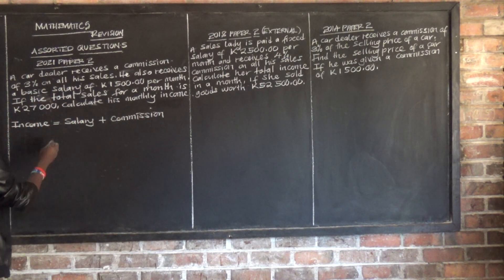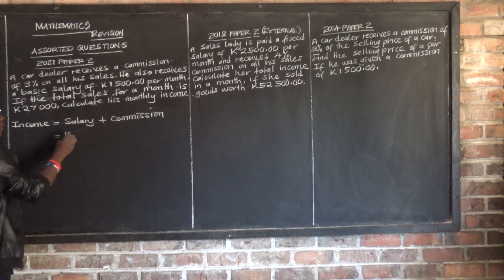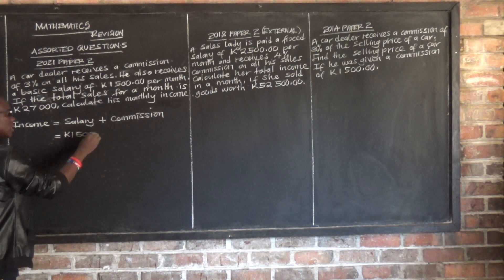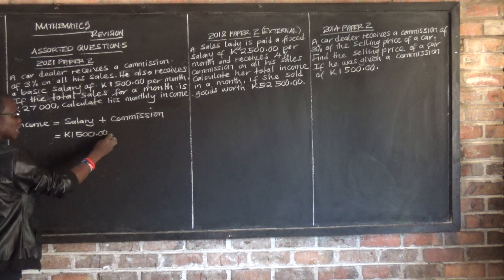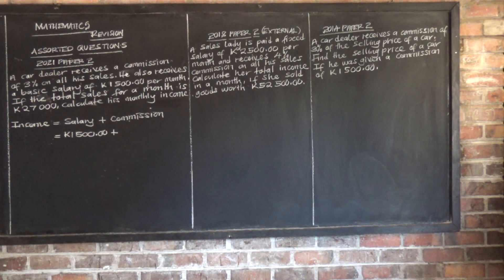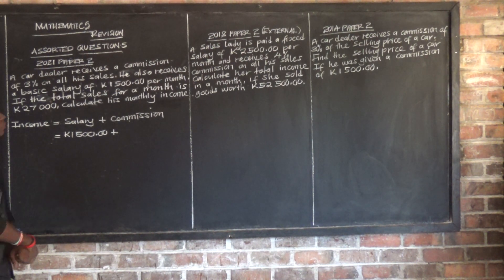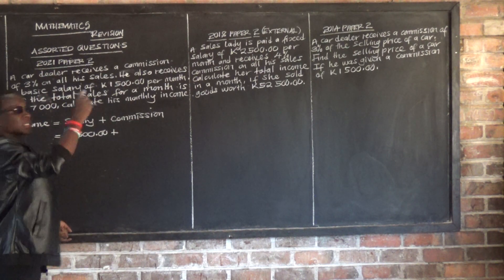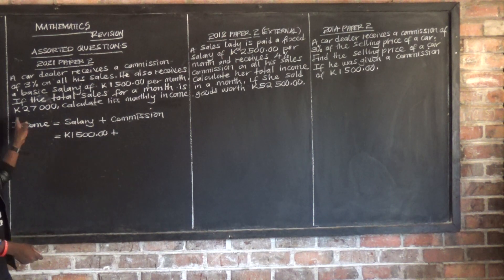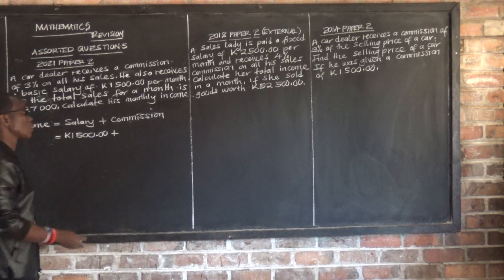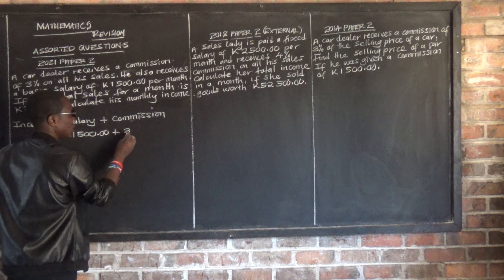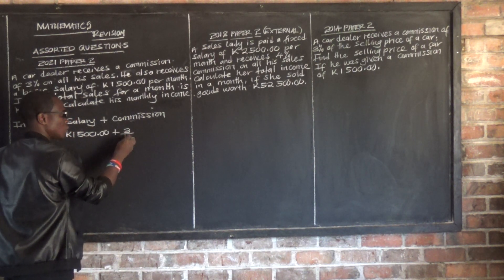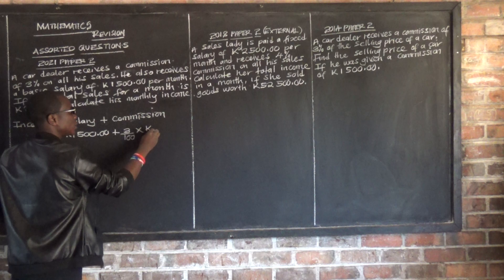The salary was fixed at $1,500. Now let's find the commission. The commission has been given in terms of a percentage, so I'm going to find 3% of $27,000. That is: 3 over 100 multiplied by $27,000.